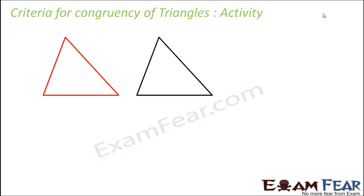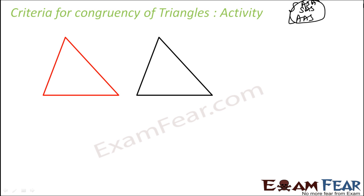Let's understand one more criteria for congruency of triangles. Till now we have seen AAS, SAS, and ASA — these three we have studied till now.